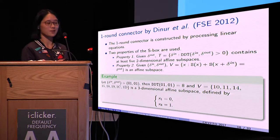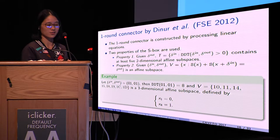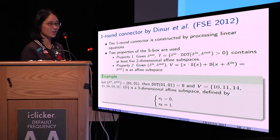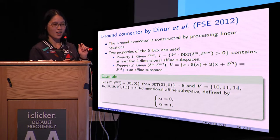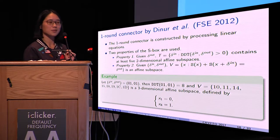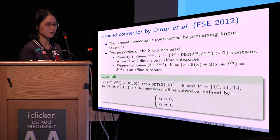At FSE 2012, Dinur, Dunkelman, and Shamir proposed the one-round connectors. The one-round connector is constructed by processing linear equations. In the one-round connector, two major properties of the S-box are used.